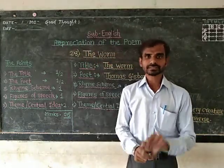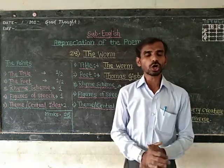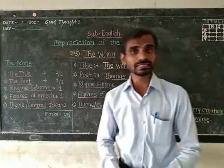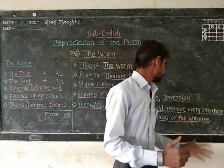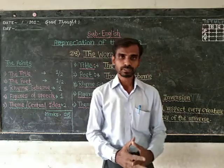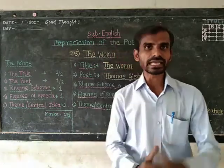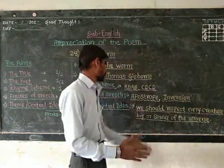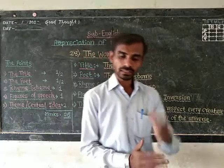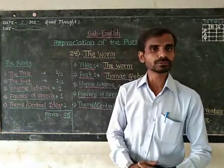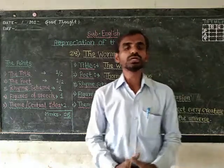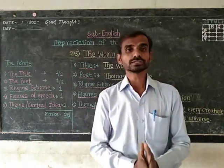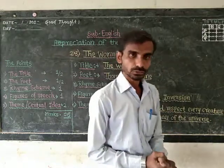It is a poem written by Thomas Gisborne. The rhyme scheme of the poem is A, B, A, B, C, D and C, D. The figures of speech of the poem are inversion and apostrophe. The central idea of our today's poem is that we should respect all small and big creatures, those which are born on the universe.